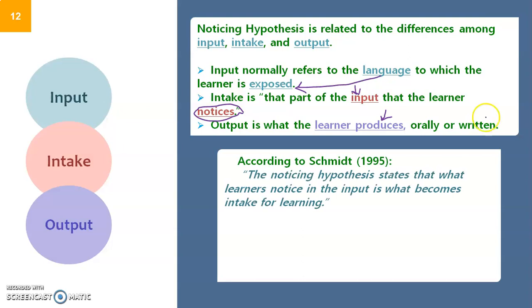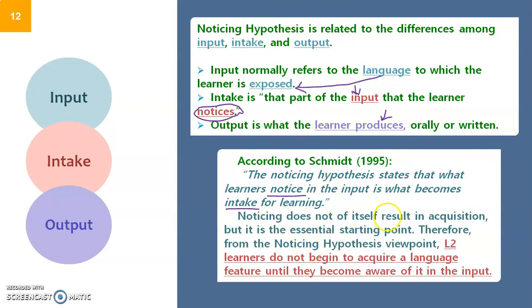According to Schmidt, the noticing hypothesis states that what learners notice in the input is what becomes the intake. Noticing does not itself result in acquisition. Schmidt was not explaining acquisition but the starting point of acquisition. All of these hypotheses are related to each other. We start with noticing, then move to interaction and later output.